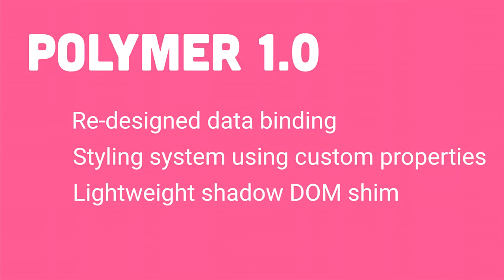Polymer 1.0 was essentially a ground-up rewrite, trying to maintain the same great ergonomics while radically redesigning and simplifying everything to make it fast. We redesigned the data binding system — rebuilt from the ground up to be more direct — introduced a whole new styling system to pierce through shadow roots, and included a lightweight Shadow DOM shim called Shady DOM rather than relying on the full heavyweight Shadow DOM polyfill. All of these things together made for a much faster production-ready library.